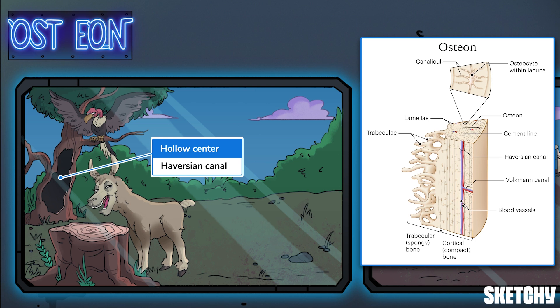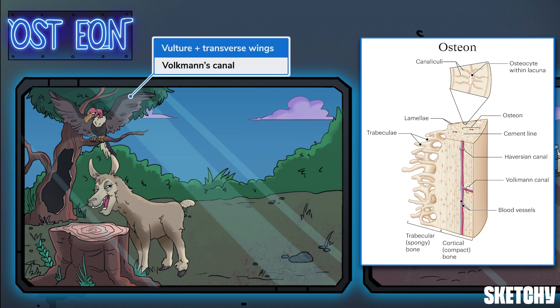Just like how this tree has a hollowed out core, Haversian canals contain the blood vessels, lymph vessels, and nerves that supply bone tissue. Transverse canals called Volkmann's canals extend from the Haversian canals connecting adjacent Osteons. This vulture with transversely extended wings, perched on a limb near the tree's hollow center, represents a Volkmann's canal.